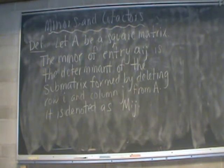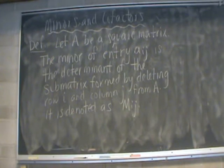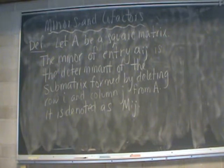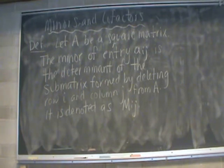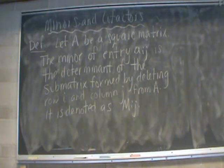Let's start off by defining the minor of a square matrix. If we have a matrix A that is square, we say that the minor of the entry Aij is the determinant of a submatrix formed by deleting row i and column j from our original matrix A. To denote our minor we usually use a capital M with subscript ij.